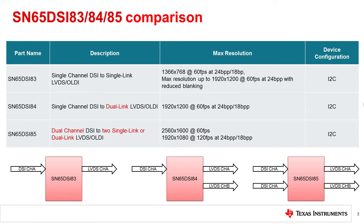To determine which device is appropriate for your application, you first need to be familiar with the different operating modes the devices offer. The DSI-83 is a single channel DSI to single link LVDS device. The DSI-84 is a single channel DSI to dual link LVDS device. The DSI-85 is a dual channel DSI to dual link LVDS device. The DSI-84 can use the same single channel DSI to single link LVDS operating mode as the DSI-83, while the DSI-85 can use the same single channel DSI to dual link LVDS mode as the DSI-84, as well as the single channel DSI to single link LVDS operating mode of the DSI-83.